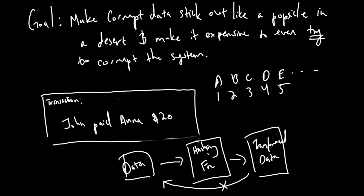What we want to do involving hashing is impose some rules for the structure of the transformed data. So if you have some transaction and you apply the hashing function to it, based on the structure of the transformed data we can say: that is not valid, or that is valid. One example of such a structure is that the transformed data must have five zeros at the end.